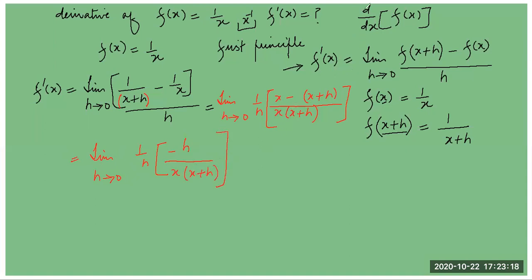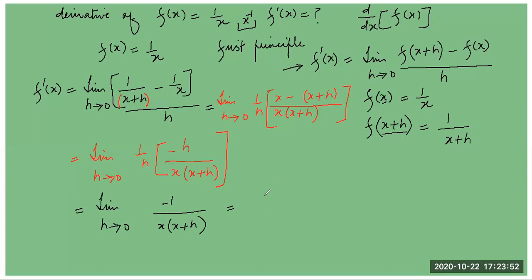This is equal to limit h approaches 0. You see that h cancels with h, so what I get is minus 1 divided by x into x plus h. Now I can easily find the limit as h approaches 0 — I put h equal to 0 — so this is equal to minus 1 by x squared. This is the answer.